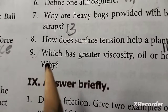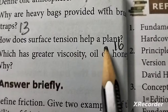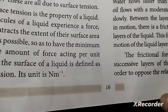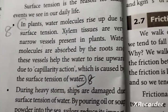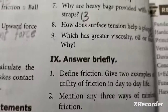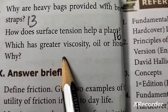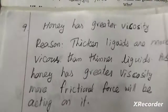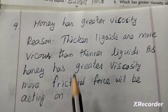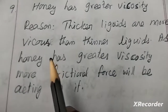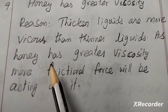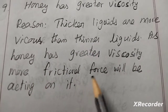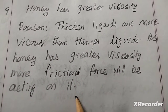Eighth question: Which has greater viscosity — oil or honey, and why? Answer: Honey has greater viscosity because thicker liquids have more viscosity than thinner liquids, so more frictional force acts on honey.